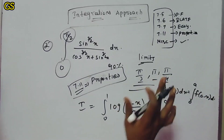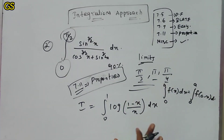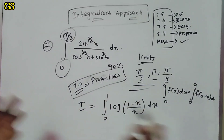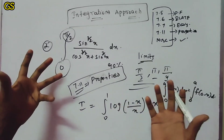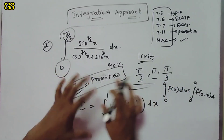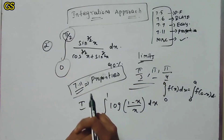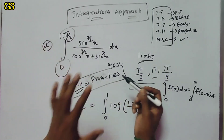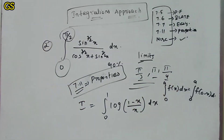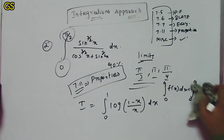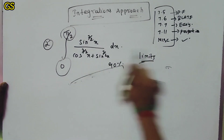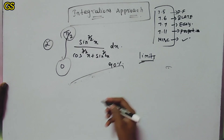F of x dx is equal to F of (a minus x) dx. In this case, you first approach and try to solve. If you want to write the exercise number and apply the property, you will get a result. The integration limits refer to exercise 7.11. If you follow this, you will get the answer. Check the rest of the video.